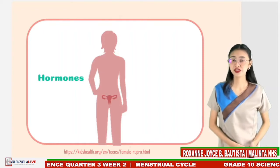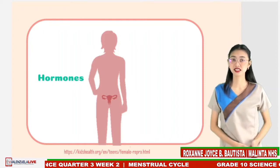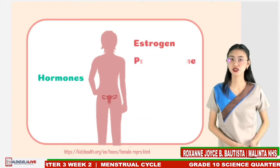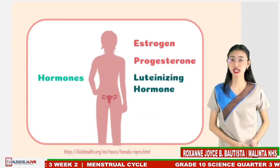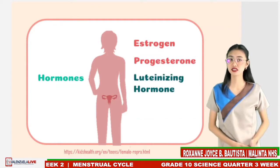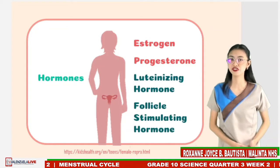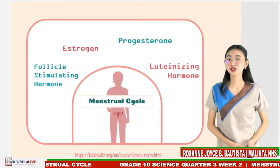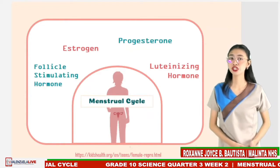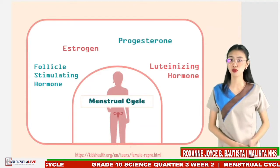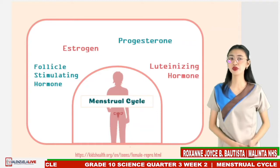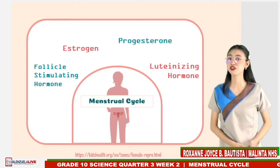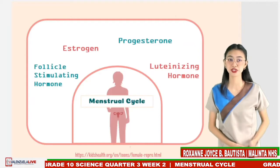In your previous science lesson, the hormones estrogen, progesterone, together with the luteinizing hormones and follicle-stimulating hormones were briefly introduced to you. In today's discussion, you will learn more about the role of these hormones involved in regulation of the menstrual cycle and the preparation of the female body for conception and pregnancy.